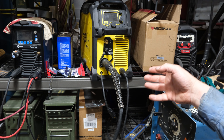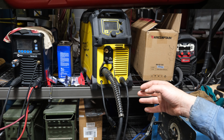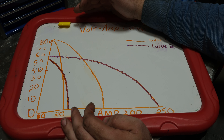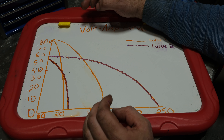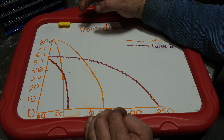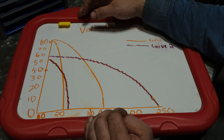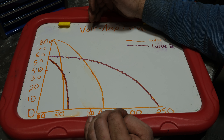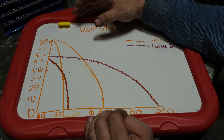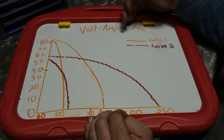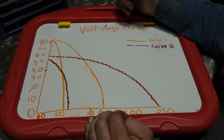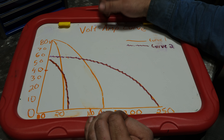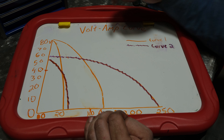That is where voltage-amperage curves come in. Welding requires voltage and amperage control, and the ratio depends on the process. This applies to electrical arc processes — not oxy-acetylene or laser. What I have depicted here are voltage-amperage curves: two curves of a Dial Arc 250 stick welder that I have, curve one and curve two.